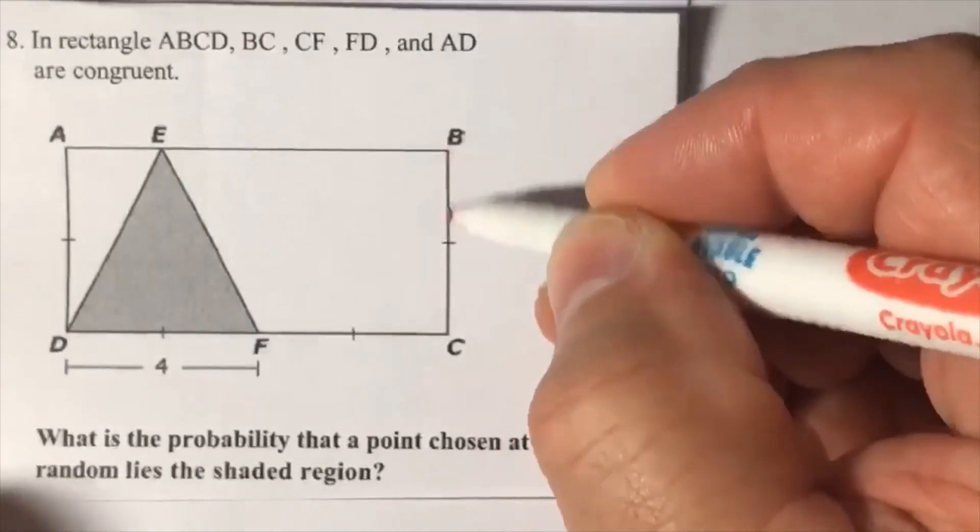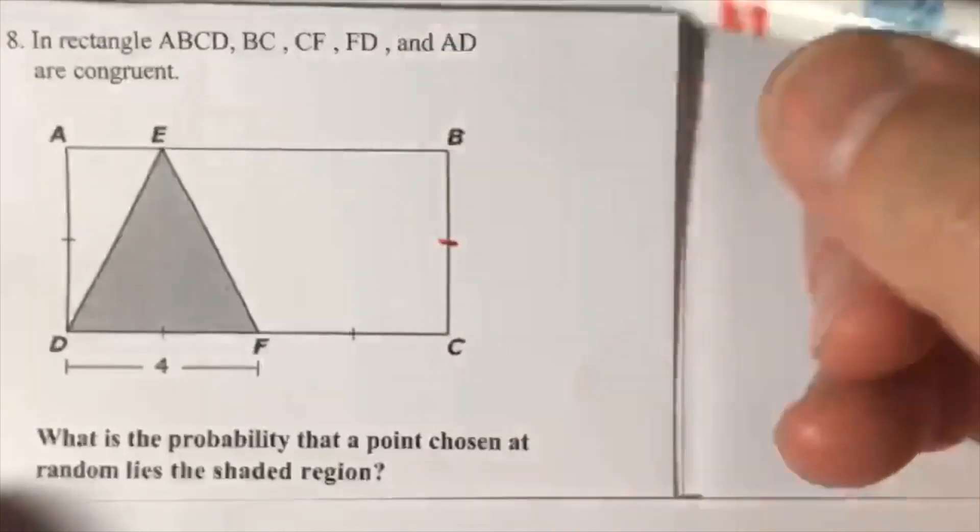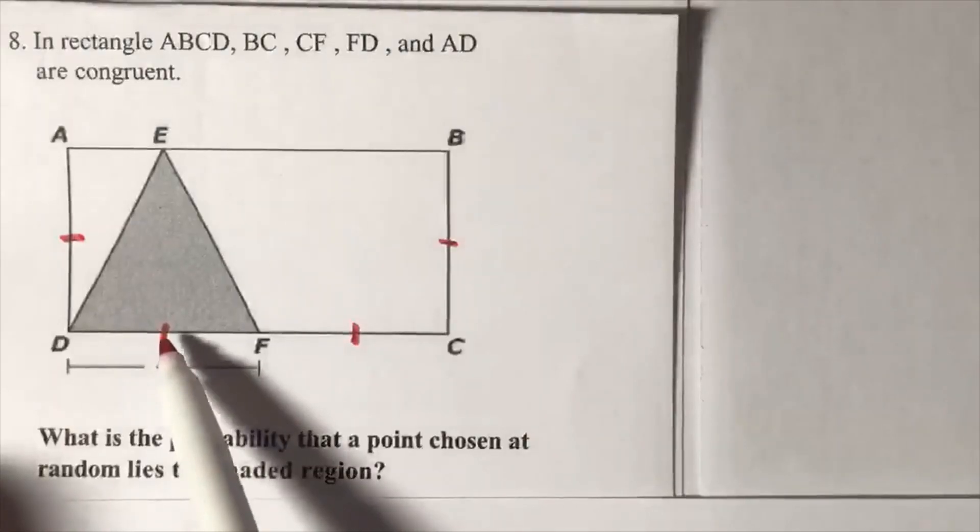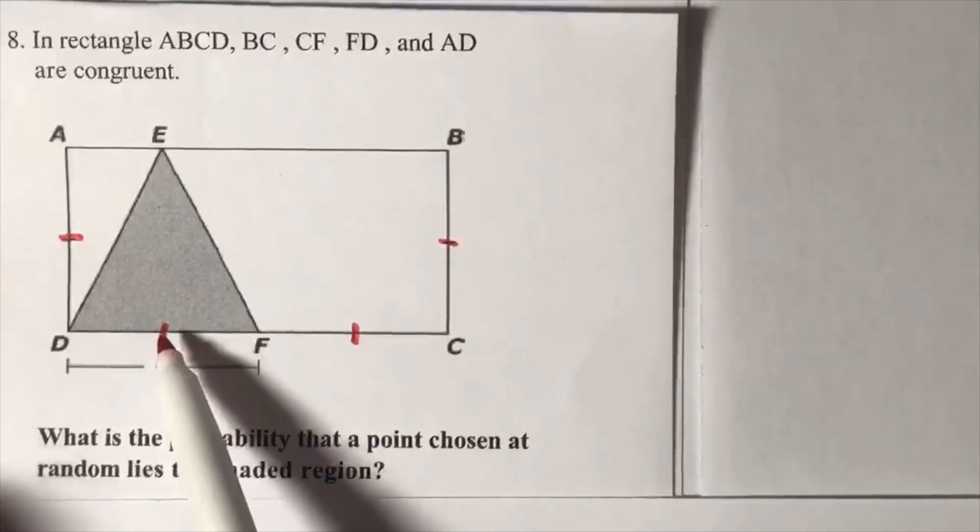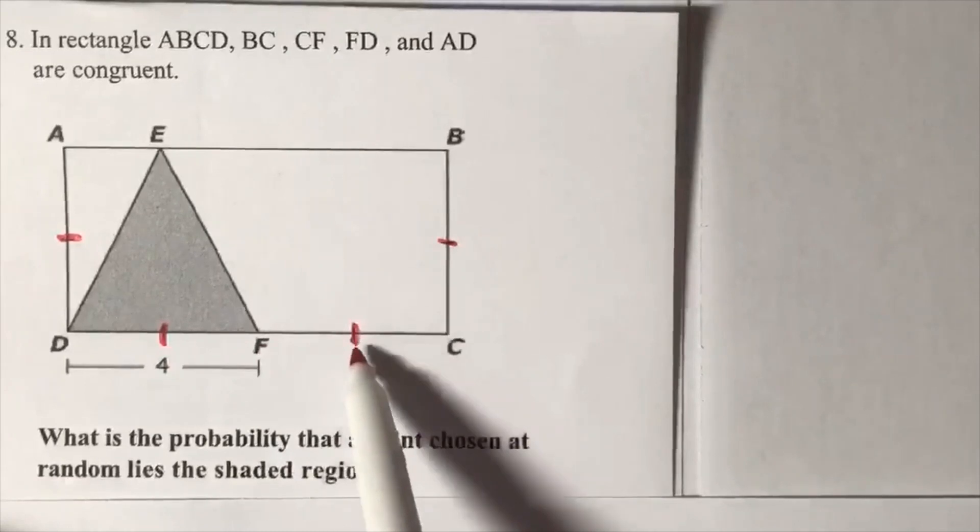From B to C, BC equals CF - they're equal. When we see a mark here, we call it a tick mark. I have one tick mark here, one here, and one from D to F.